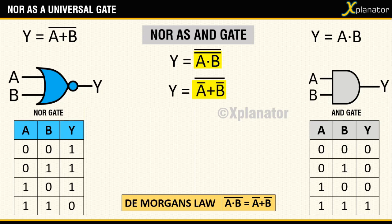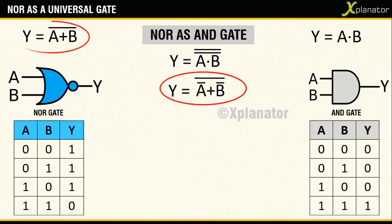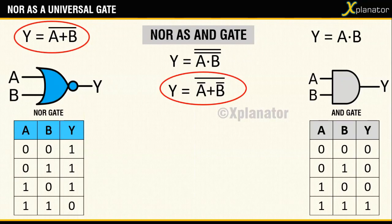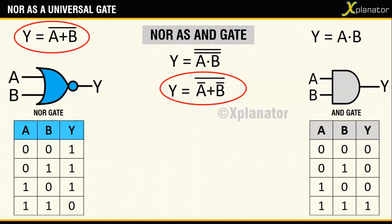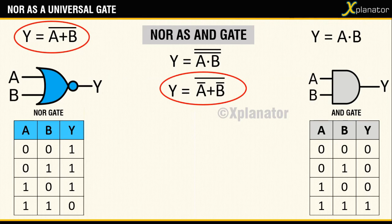Now compare this with the equation for NOR and you will find that both are in the same format, that is there are two terms with plus in between them and a bar over them. The only difference you see here is that in place of A you got a A bar and in place of B you got a B bar.